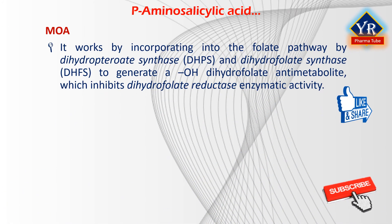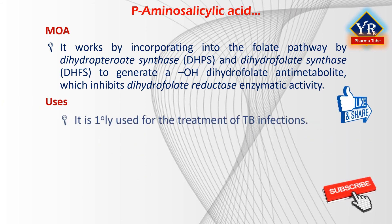Paraaminosalicylic acid works by incorporating into the folate pathway via dihydropteroate synthase and dihydrofolate synthase to generate a hydroxyl dihydrofolate antimetabolite, which in turn inhibits dihydrofolate reductase enzymatic activity. Thus, it inhibits the synthesis of folic acid, which is essential for the pathogen.